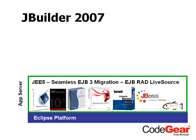On top of that, we've integrated application server development functionality — both features we've had in JBuilder and taken to the next step. We have app server support for all traditional JBuilder commercial vendors: IBM, Oracle, Sun, BEA, and Borland. Now we also have JBoss and the GlassFish reference implementation.